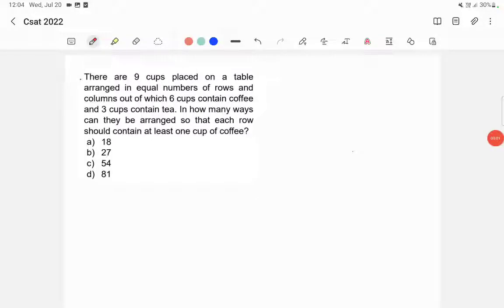There are nine cups placed on a table arranged in equal numbers of rows and columns, out of which six cups contain coffee and three cups contain tea. In how many ways can they be arranged so that each row should contain at least one cup of coffee?